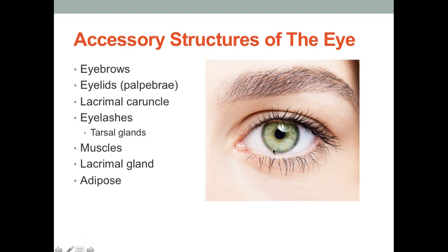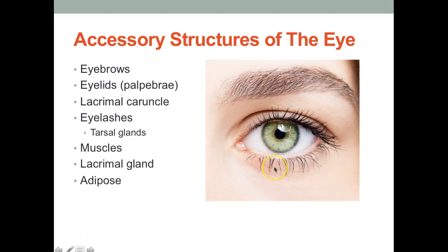Eyelids — the anatomical term for eyelids is palpebra. We have the superior palpebra and the inferior palpebra. The lacrimal caruncle is this little pink structure here.